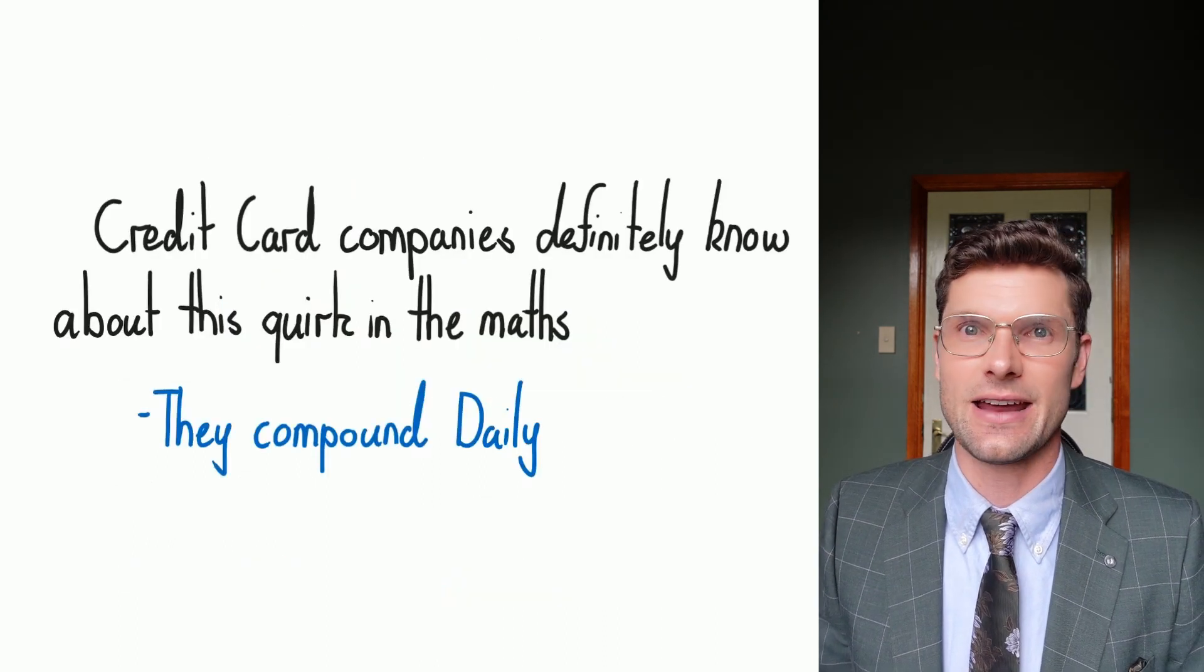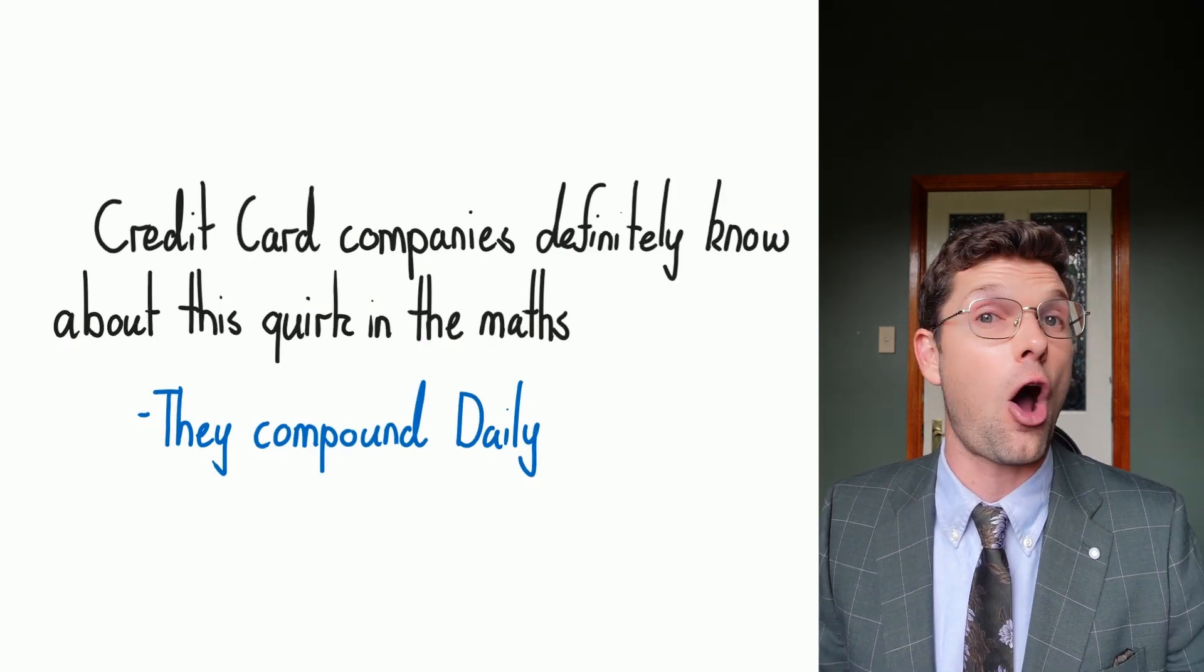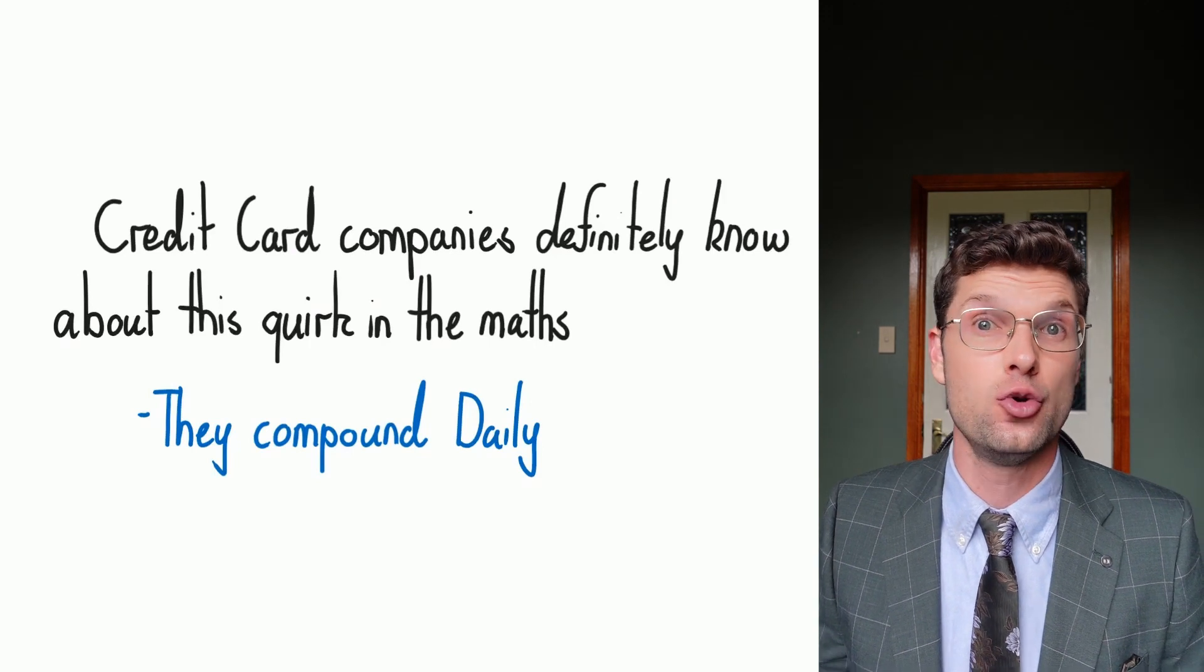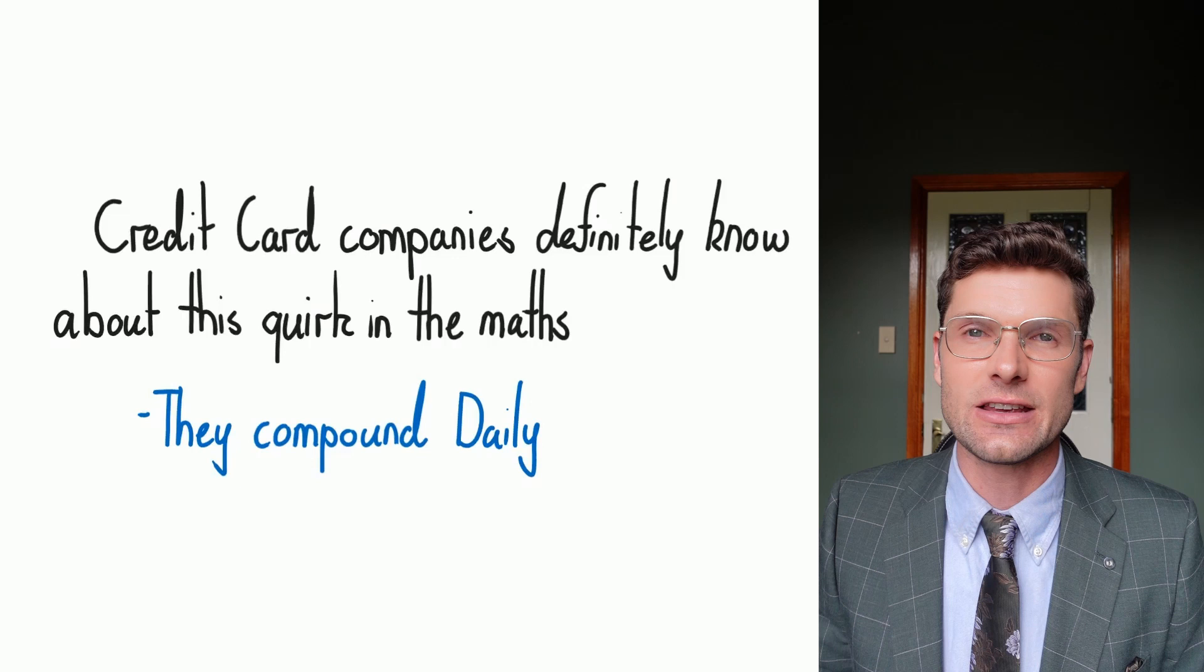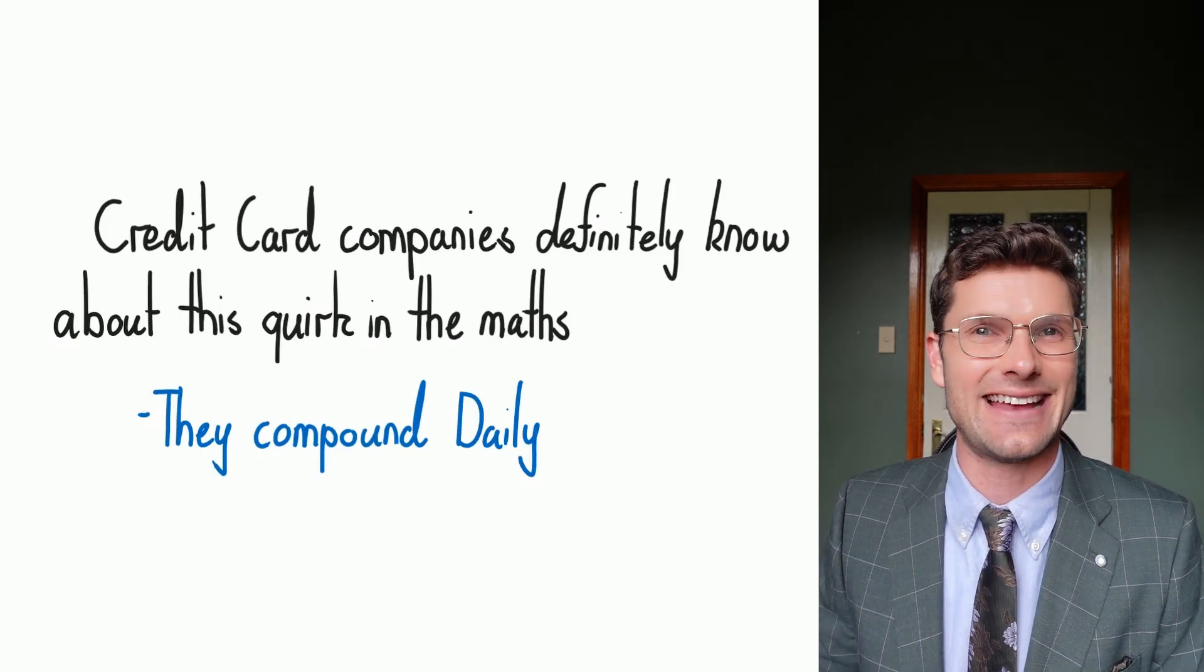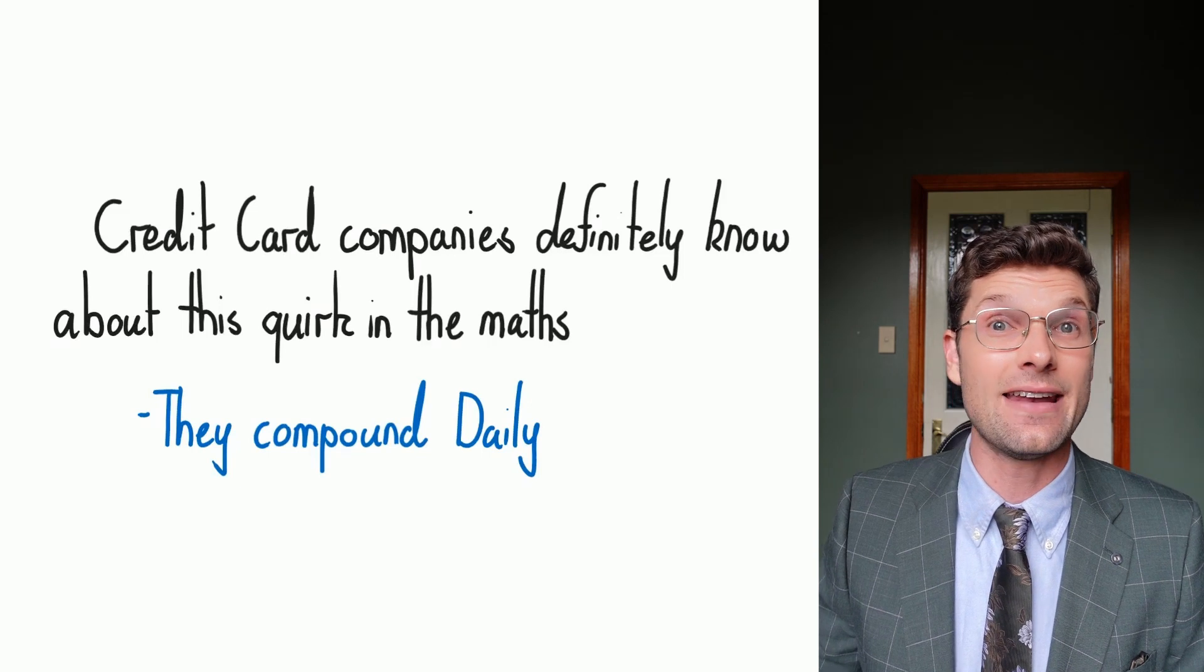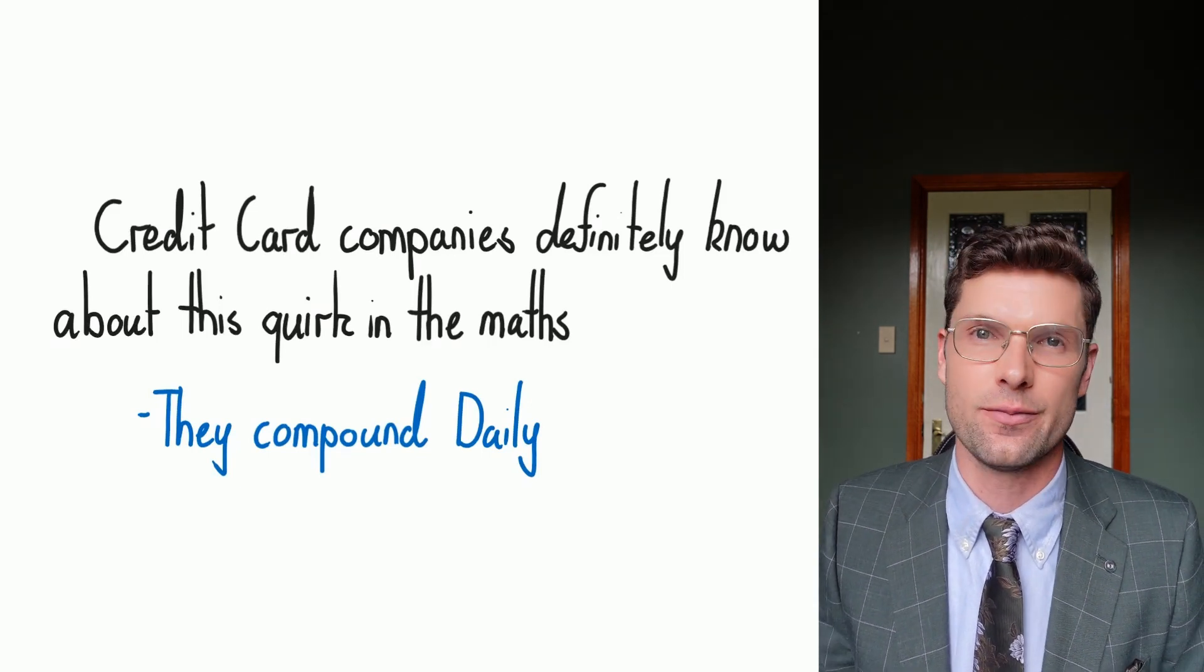One company that definitely understands the power of this changing of n and the rate is credit card companies. They obviously lend out money to customers, and we pay it back when we've borrowed that money. But a lot of these credit card companies charge interest daily, so it's compounded daily. So that means our n is times by 365 and our rate is divided by 365.